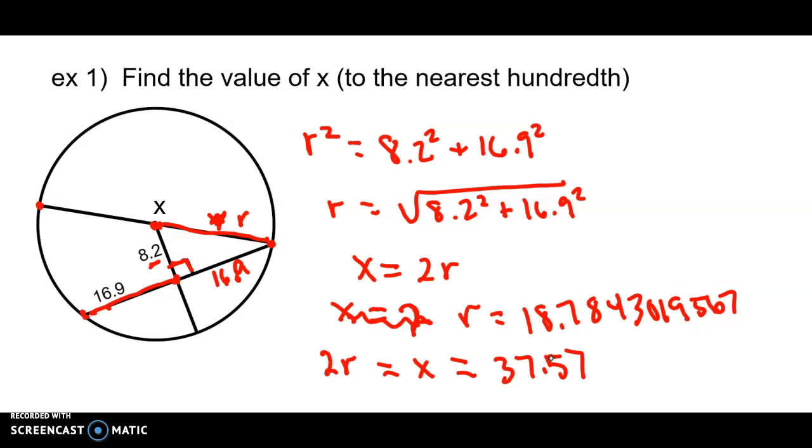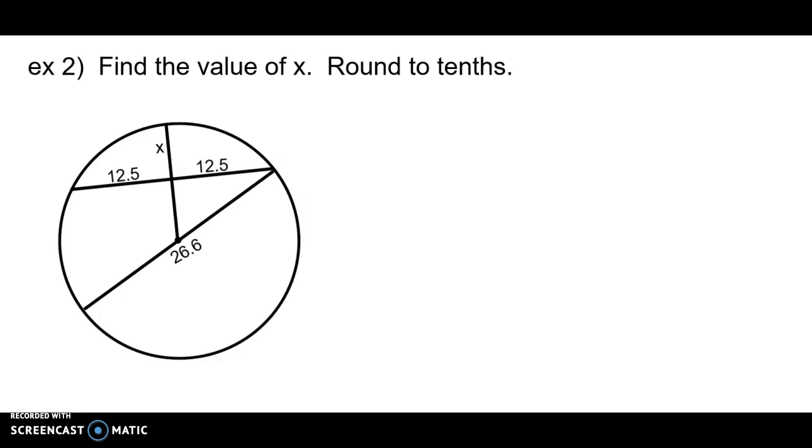All right. Second example. It's all about the Pythagorean theorem. These are right triangles that we're dealing with. Just to look and make sure you see the right angle in the corner. Okay. Example two. Find the value of X and round to tenths.